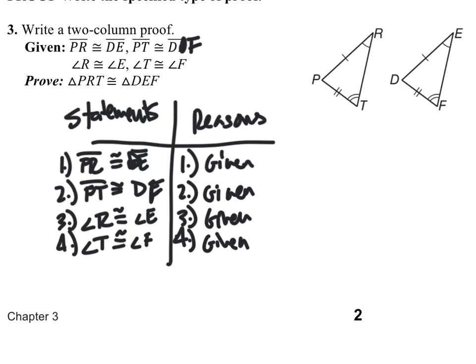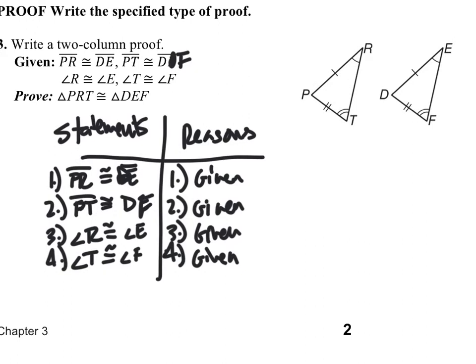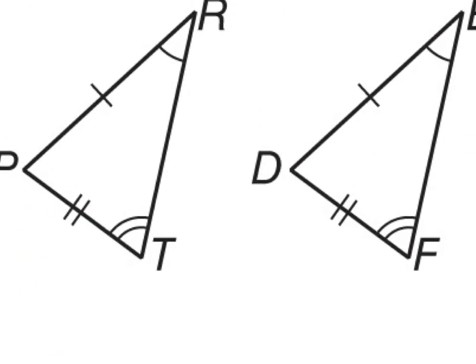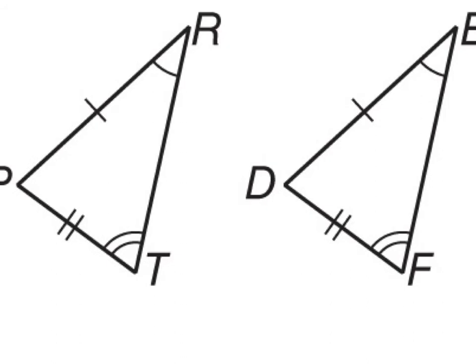So what I want to prove is that these two triangles are congruent. What I notice is that I have this side and this side are congruent, and this side and this side are congruent. I would like to use side-angle-side. I want to show that angle P is congruent to angle D, but they don't give that to us. They tell us that these two angles are congruent and these two angles are congruent, but from the picture I know that angle P is congruent to angle D, and that's by the third angles theorem.